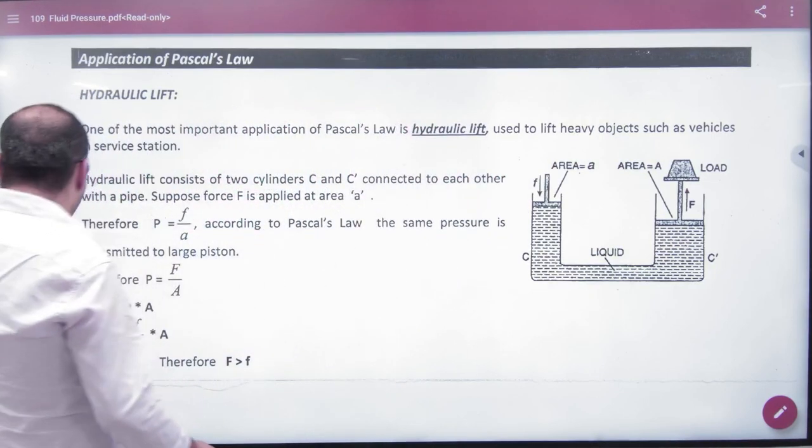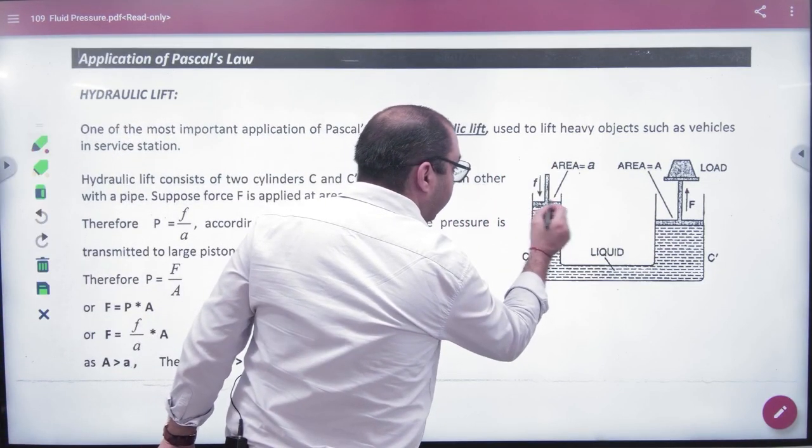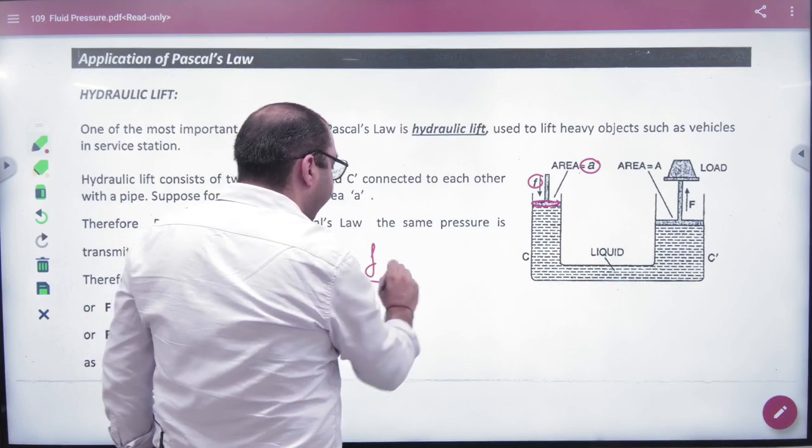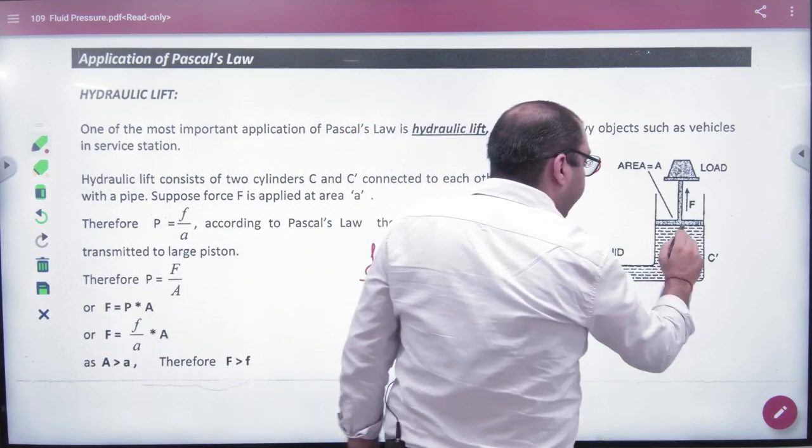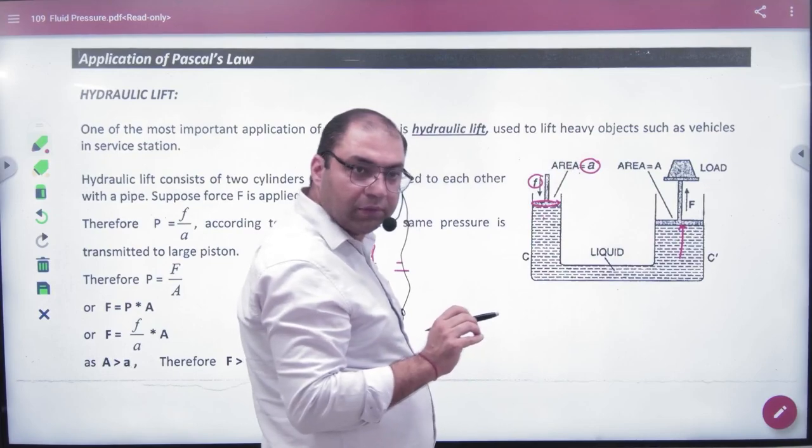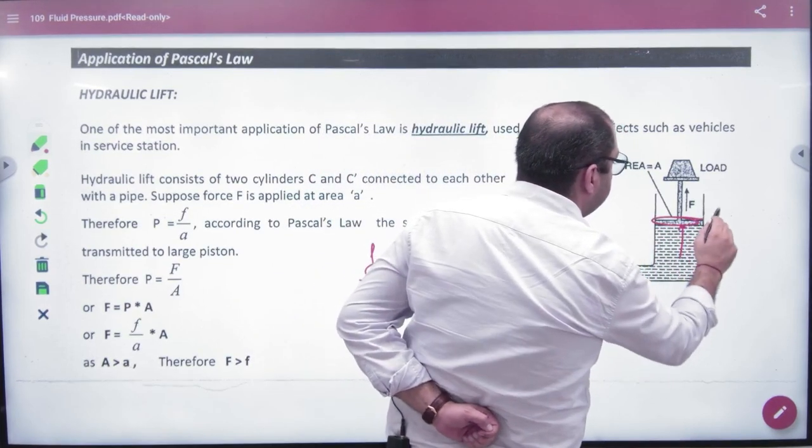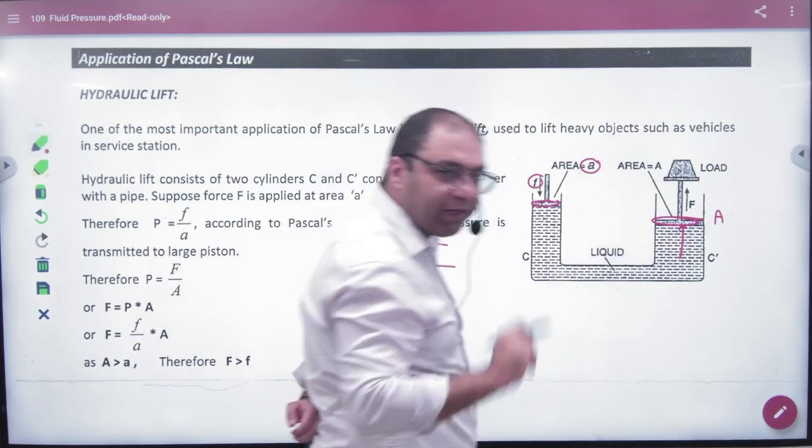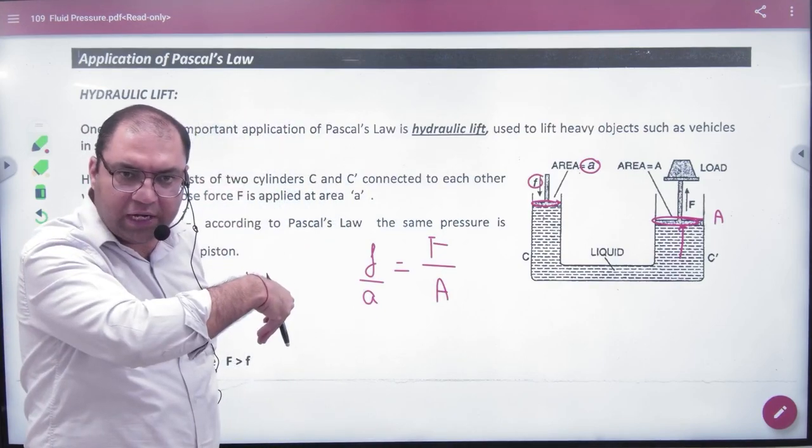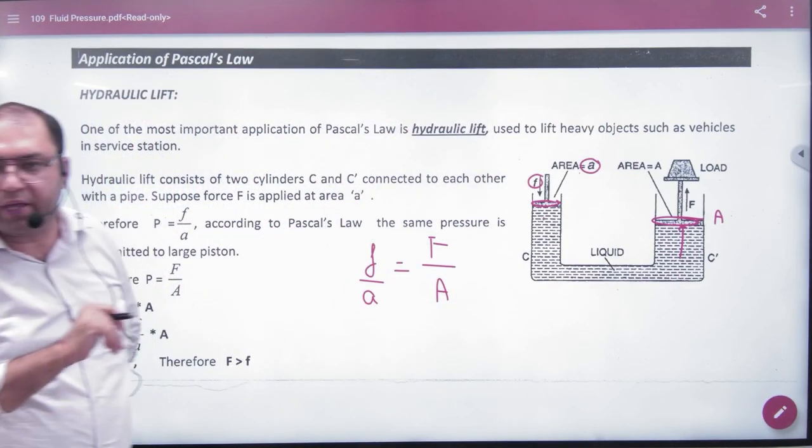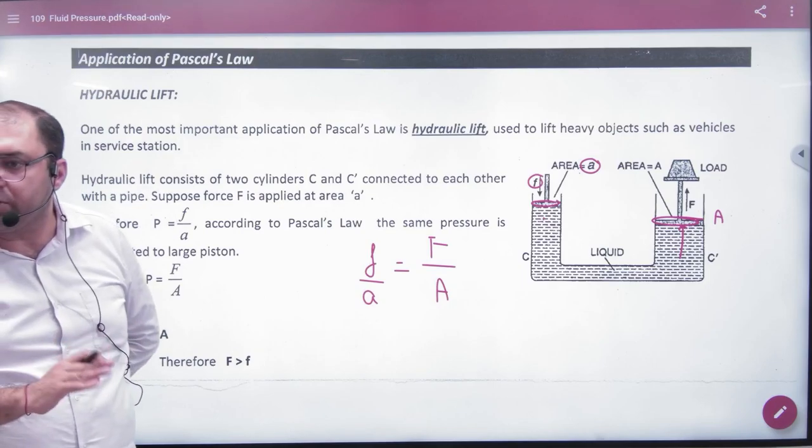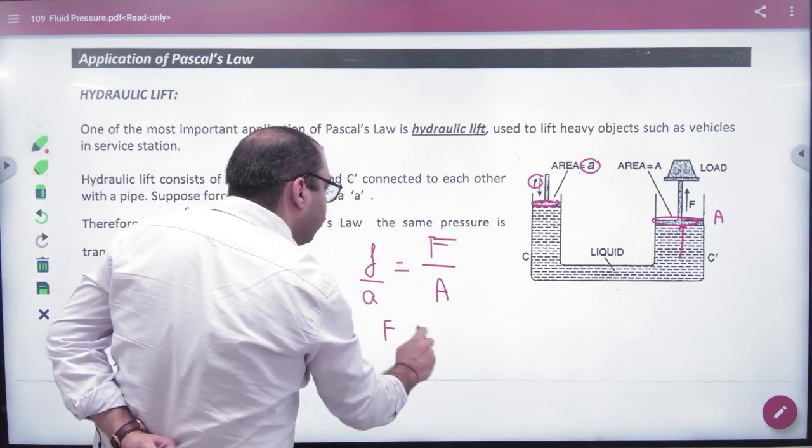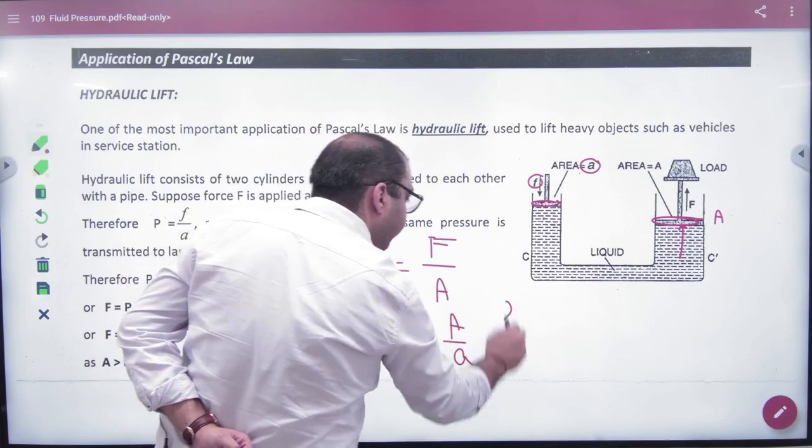Now, where the force is put by your hands, that area you have taken as small 'a' and force is F. The pressure is F by a. Where does the pressure go? The pressure goes here where the area is capital A. And how much force will transfer? Because of pressure, capital F. Pascal said the pressure values at both ends are the same. So, the force on this car becomes F = (F/a) × A.